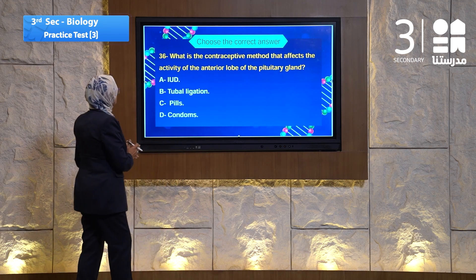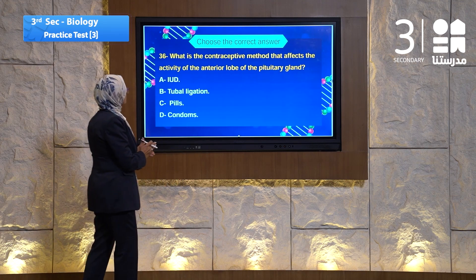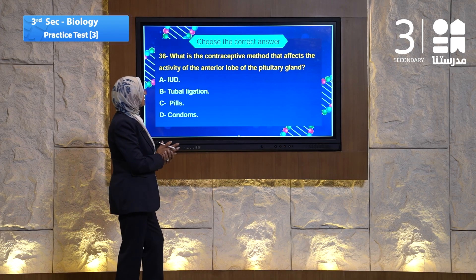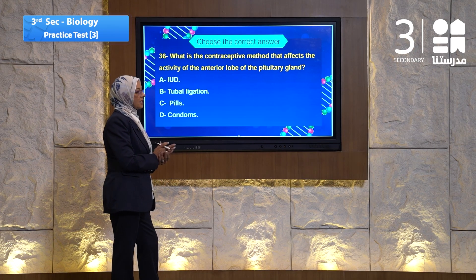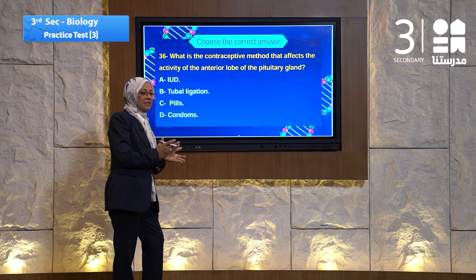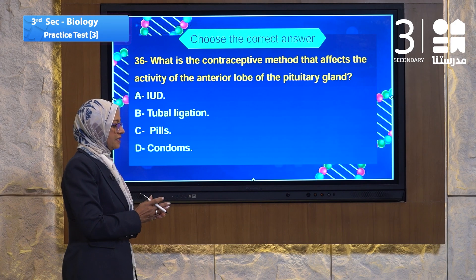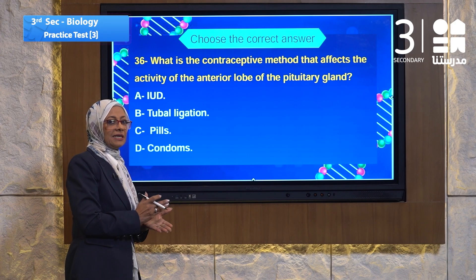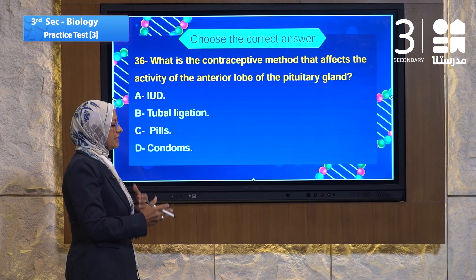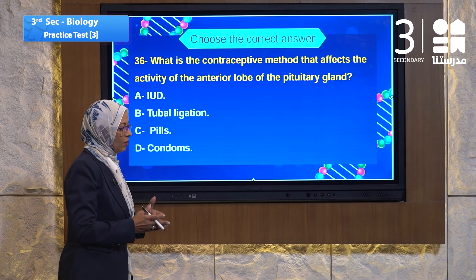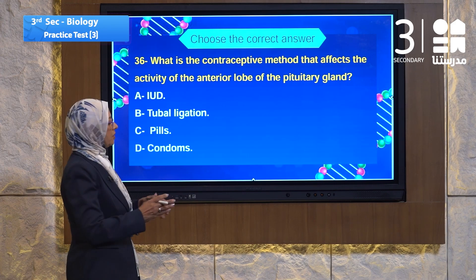Let's go to question 36. Question 36 asks about which contraceptive method stops pregnancy by affecting the activity of the anterior lobe of the pituitary gland — the lobe that stimulates the ovary to produce hormones and produce ovum.